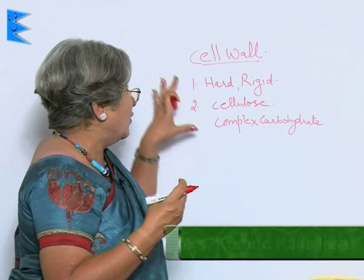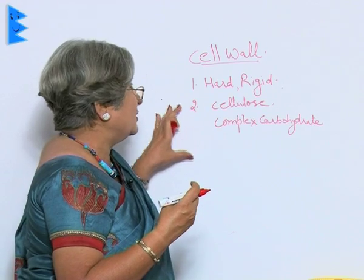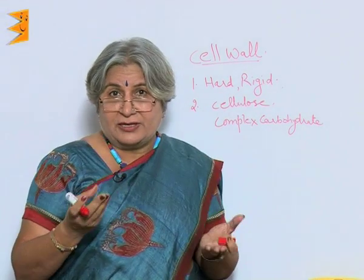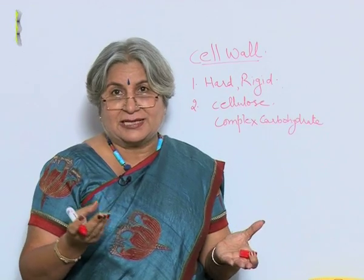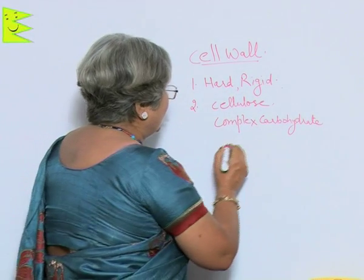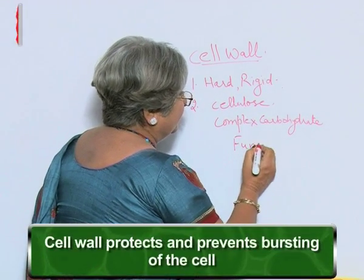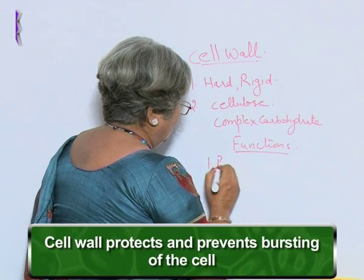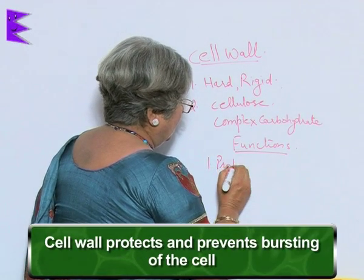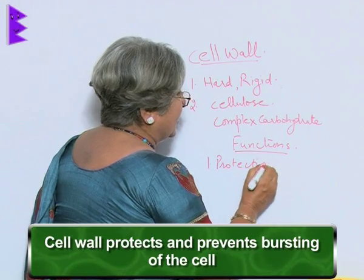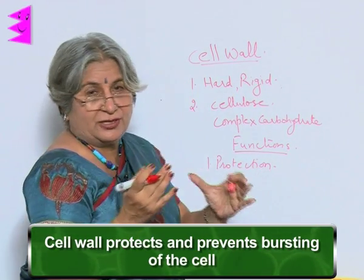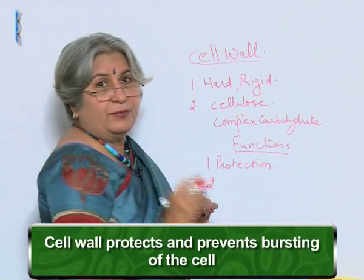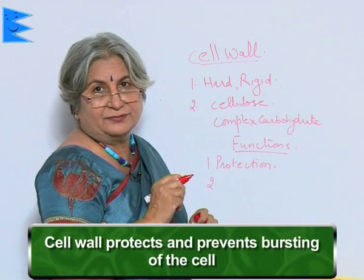The cell wall is made up of cellulose and it is hard and rigid. Just like the cell membrane, the main function of the cell wall is protection. Not only does it provide physical protection, it also prevents the bursting of the cell.